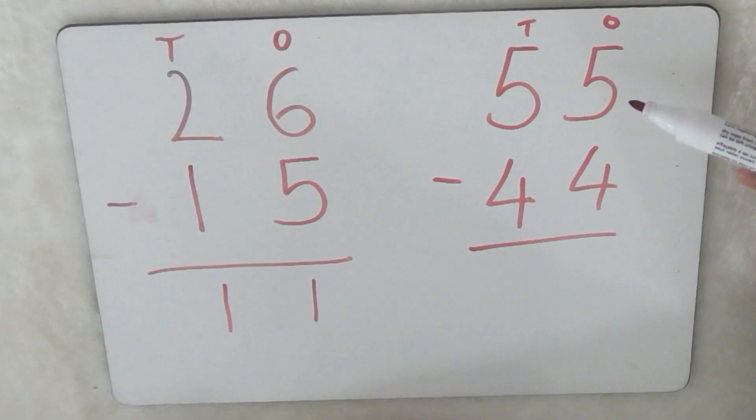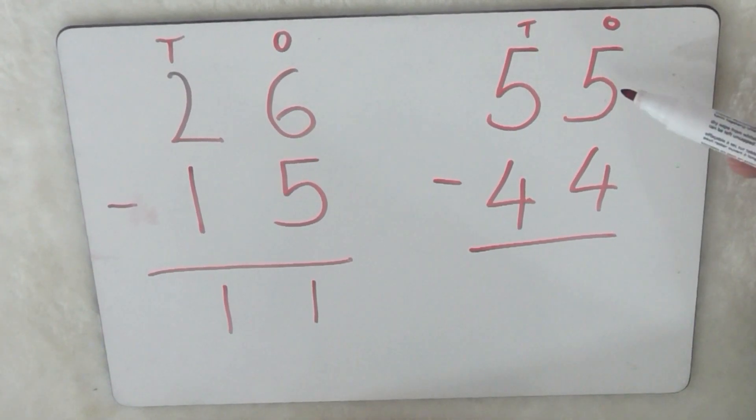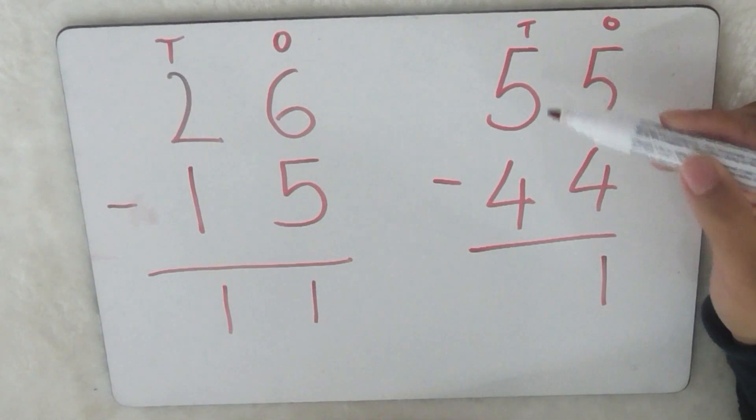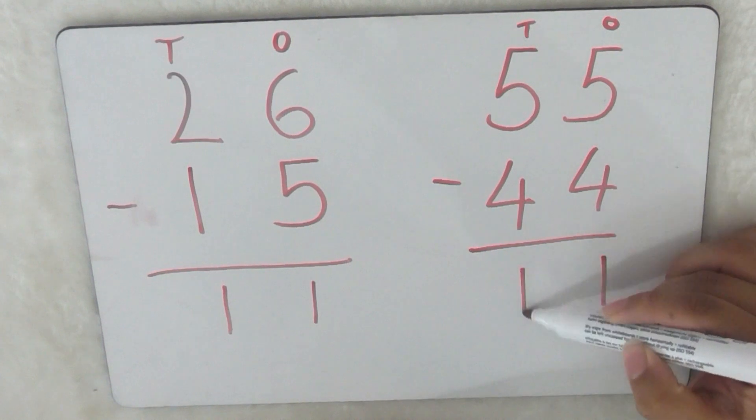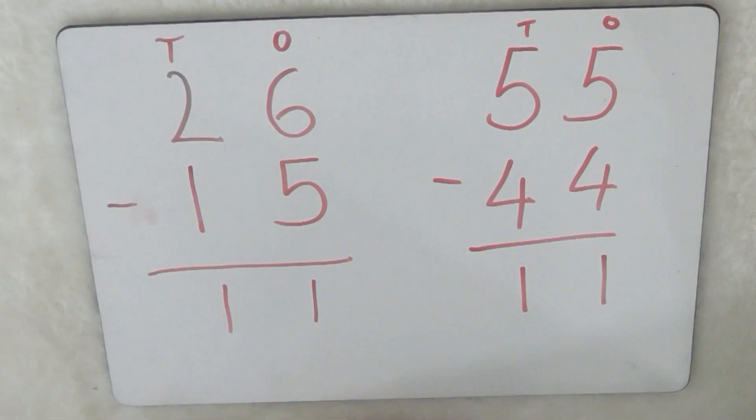Let's try this one. So we start with the ones again. So five take away four, that's one. And then five take away four, and that's one. Oh, they're both equal 11.